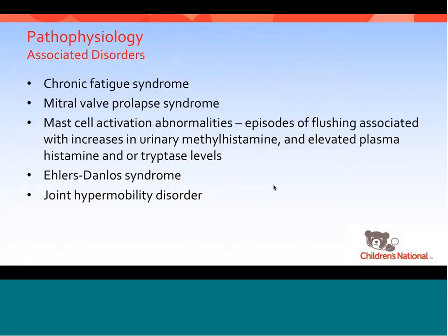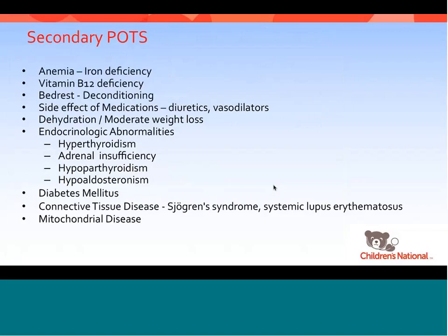Other associations include chronic fatigue syndrome, mitral valve prolapse syndrome, mast cell activation, Ehlers-Danlos syndrome, and joint hypermobility. In evaluating patients with POTS, we also try to rule out secondary forms, such as anemia, iron deficiency, vitamin B12 deficiency, prolonged bed rest leading to deconditioning, medication side effects from vasodilators or diuretics, moderate weight loss diets, and endocrinologic abnormalities such as hypothyroidism, adrenal insufficiency, and hypoaldosteronism. Diabetes can be associated with autonomic dysfunction, and there's an association with Sjögren's syndrome and lupus. In very refractory patients, we look for mitochondrial disease, which we see in about 5% of the population.